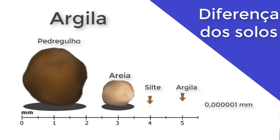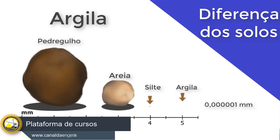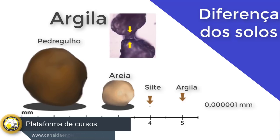A argila é tão pequena que os átomos fazem a ligação diretamente entre as partículas. Essas ligações podem ser feitas por hidrogênio ou oxigênio. Não vou entrar em detalhes dessas questões químicas, pois a gente quer saber o comportamento sem nos aprofundar muito na química. Por conta dessa ligação molecular, esse solo é denominado como um solo coesivo.